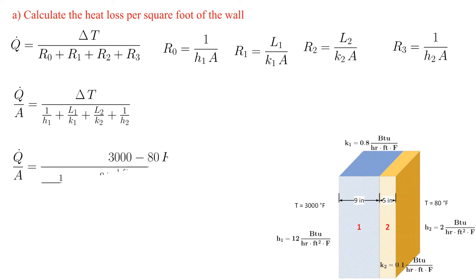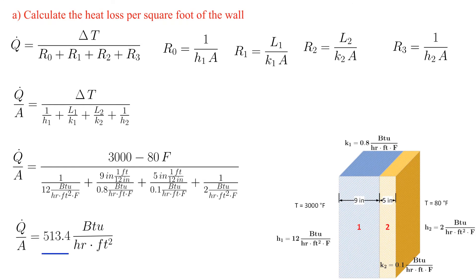Substituting in values and units, we obtain the heat flux is equal to 513.4 BTUs per hour feet squared. Note that this is the heat flux through each slab. We will be using this to solve for other temperatures in parts Bravo through Delta.